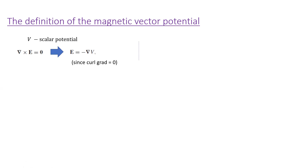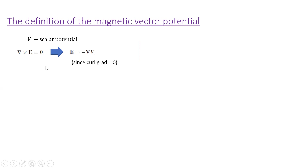For the magnetic case, we know that — we established last time — that the curl of B is not zero. It's equal to mu-naught J, which is Ampere's law. So if we tried to define a scalar magnetic potential, we would run into the problem that the curl of the gradient of that would be zero and not mu-naught J. That's the reason why we can't use a scalar potential for the magnetic field.